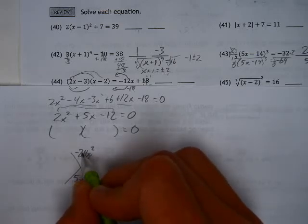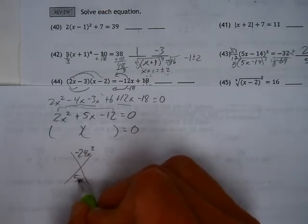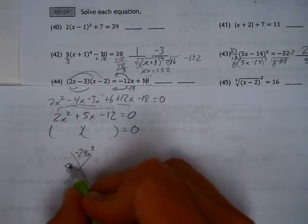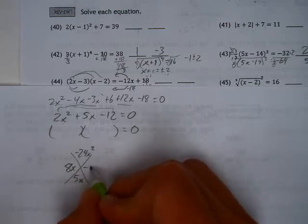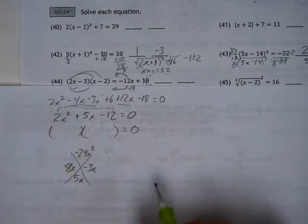24 has a lot of options, but only 8 and 3 add together to get 5. And that's only if 8x is positive and 3x is negative.